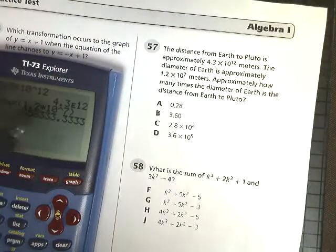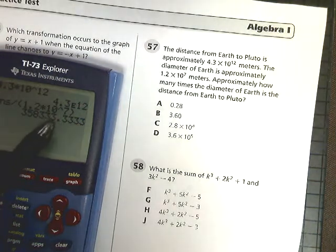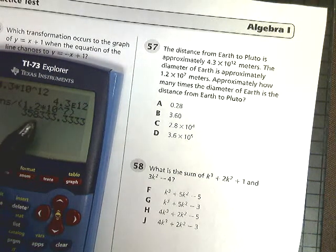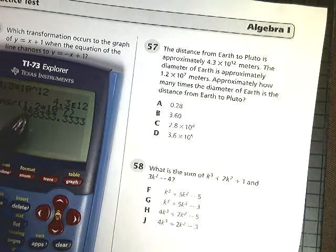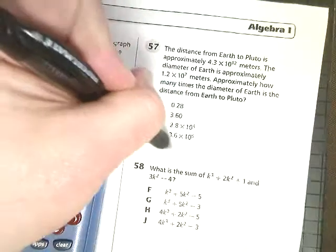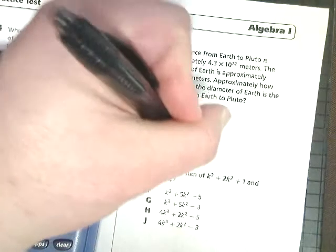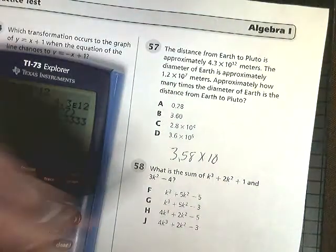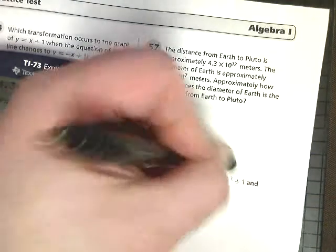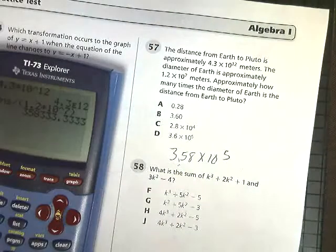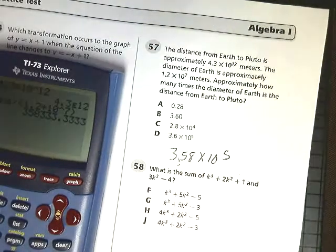Well, if I move it into scientific notation, and I go over 1, 2, 3, 4, 5 spots, that will put that decimal point behind that 3, just like this, which is what I want. And I had to move it over 5, so I get 3.6, basically, times 10 to the 5th. So the answer for number 57 should be D.